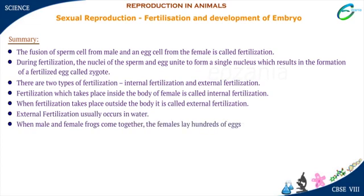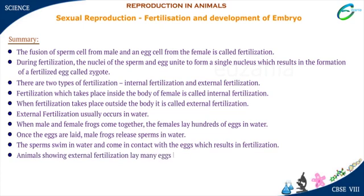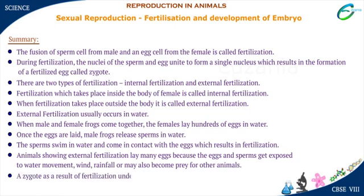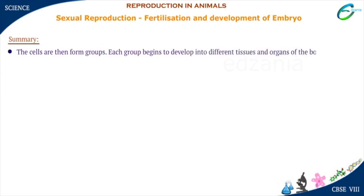When male and female frogs come together, the females lay hundreds of eggs in water. Once the eggs are laid, male frogs release sperms in water. The sperms swim and come in contact with the eggs, which results in fertilization. Animals showing external fertilization lay many eggs because the eggs and sperms get exposed to water movement, wind, rainfall, or may also become prey for other animals. A zygote undergoes cell division repeatedly to give rise to a ball of cells. The cells then form groups, and each group begins to develop into different tissues and organs of the body. This developing structure is called embryo.